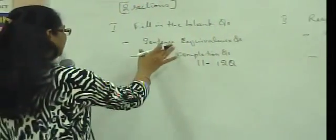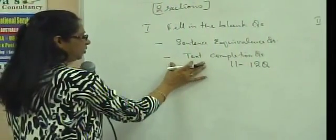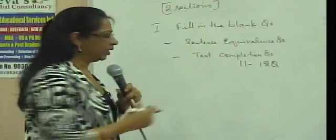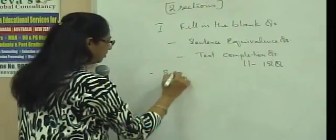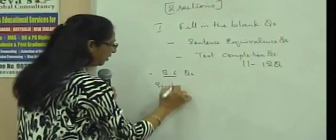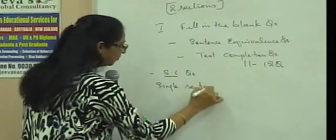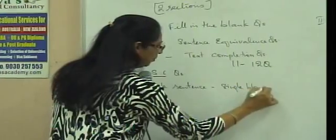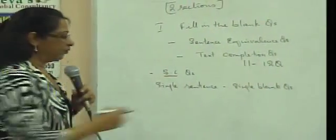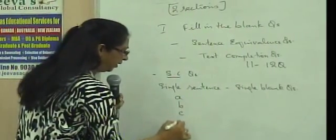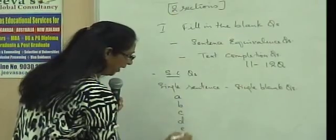Now, the sentence equivalence and text completion questions are the two fill-in-the-blank questions. Let me explain what they are. The sentence completion questions are usually single sentence and single blank questions. For the single blank, you have six options. A, B, C, D, E, and F.